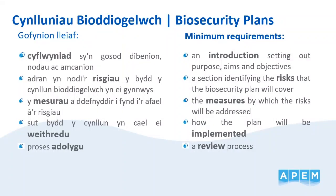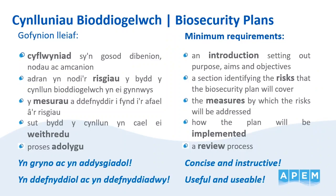Lastly, creating and following a biosecurity plan is an important step. Biosecurity plans are an acknowledgement of the potential risk that an activity could pose on the introduction and spread of marine INNS and the biosecurity measures that can be taken to mitigate this risk. Typically, at a minimum, these plans include an introduction which sets out the aims and objectives of the plan. They should include where and to whom the plan applies, a section identifying the risks that the biosecurity plan will cover, the measures by which the risks will be addressed, steps for how the plan will be implemented, and a review process identifying who the plan will be reviewed by and how frequently. Biosecurity plans are not currently a legal requirement, but are seen as good practice. Overall, biosecurity plans must be concise and instructive. They must be both usable and useful.